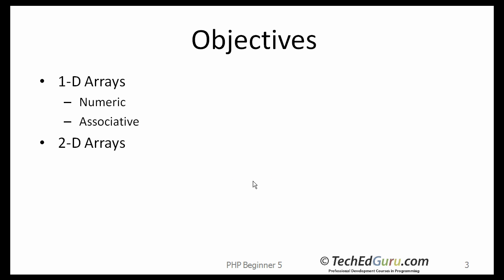The objective of this lesson is to learn about 1D and 2D arrays. In 1D, I will discuss both numeric, meaning with a numeric index, or associative.